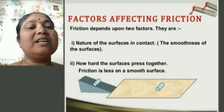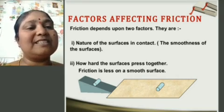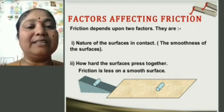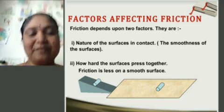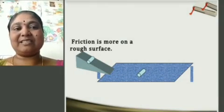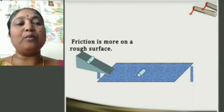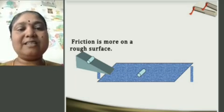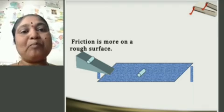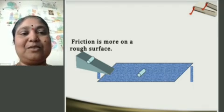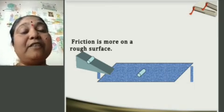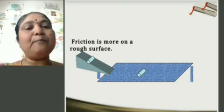The nature of the surface in contact — that is, the smoothness of the surfaces — and how hard the surface is pressed together. Friction is less on the smooth surface and friction is more on the rough surface. If you throw a ball on a rough surface, it doesn't go very far. If you play on a slide, the slide is very smooth and you can go very fast. So if the surface is smooth, friction is less; if friction should be more, the surface should be rough.